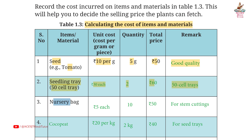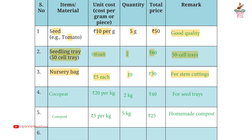Third: nursery bag. Unit cost: Rs. 5 each. Quantity: 10. Total price: Rs. 50. Remark: for stem cuttings. Fourth: coco peat. Unit cost: Rs. 20 per kg. Quantity: 2 kg. Total price: Rs. 40. Remark: for seed trays.